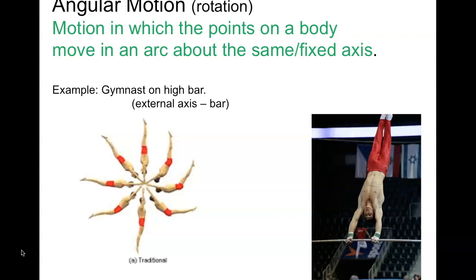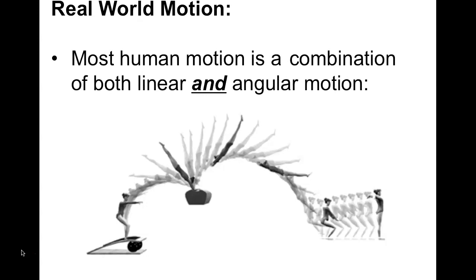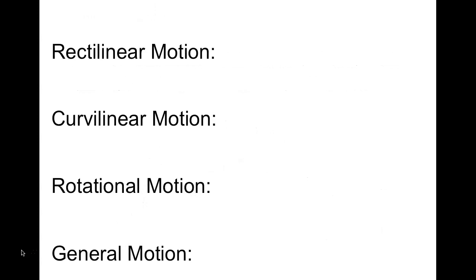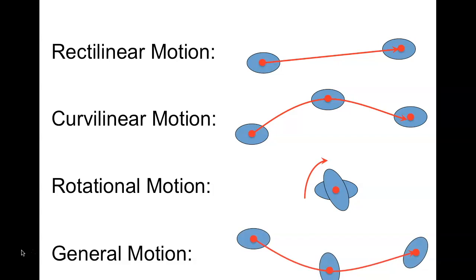Real-world motion, or general motion, is a combination of both linear and angular motion. This is most human motion. We have rectilinear, curvilinear, rotational about a middle axis, and then general motion combining all of these.